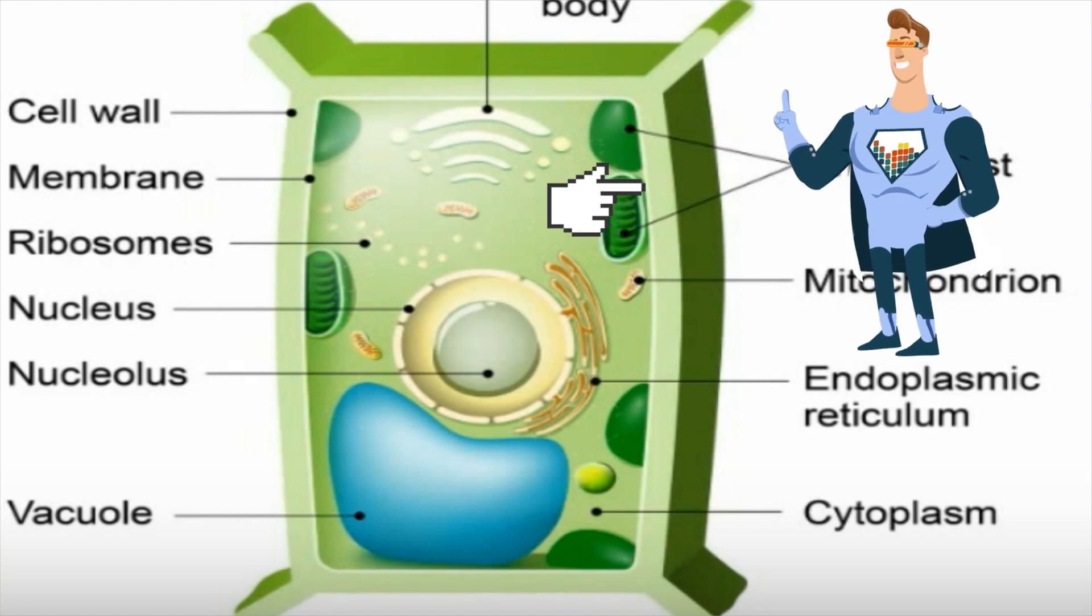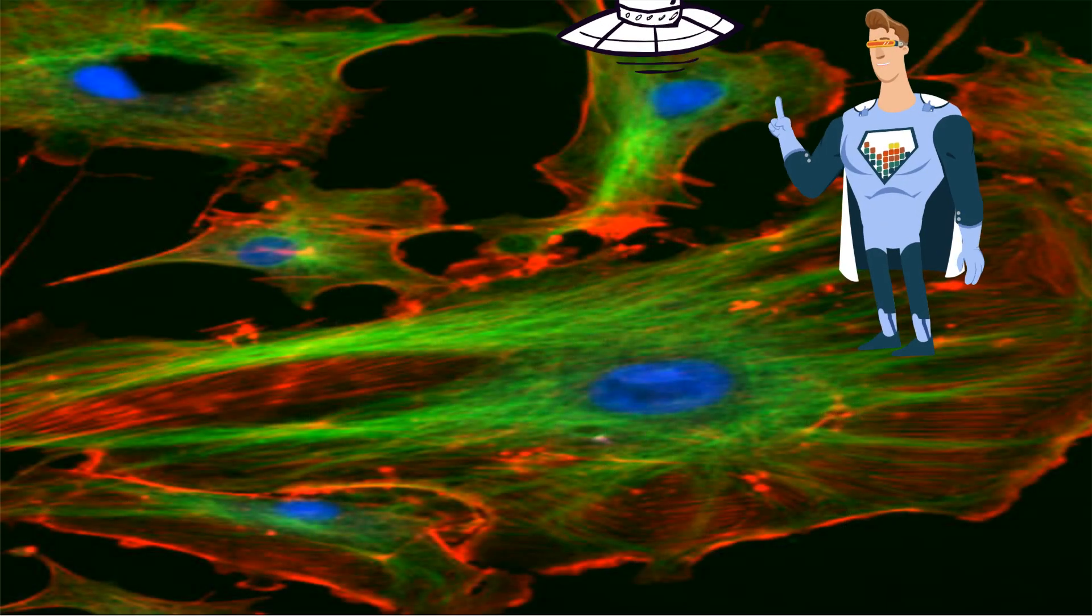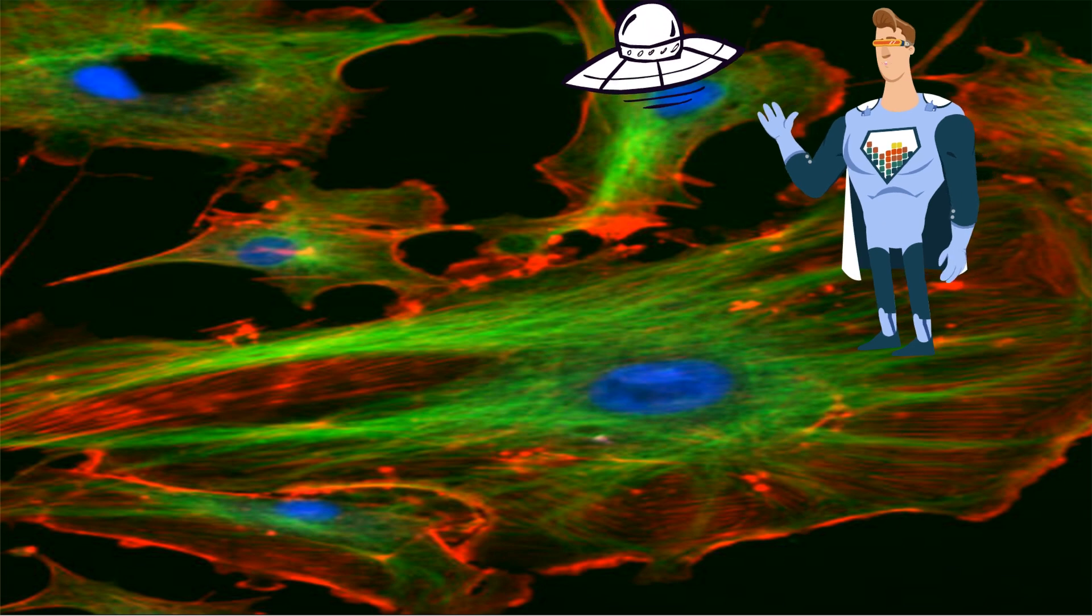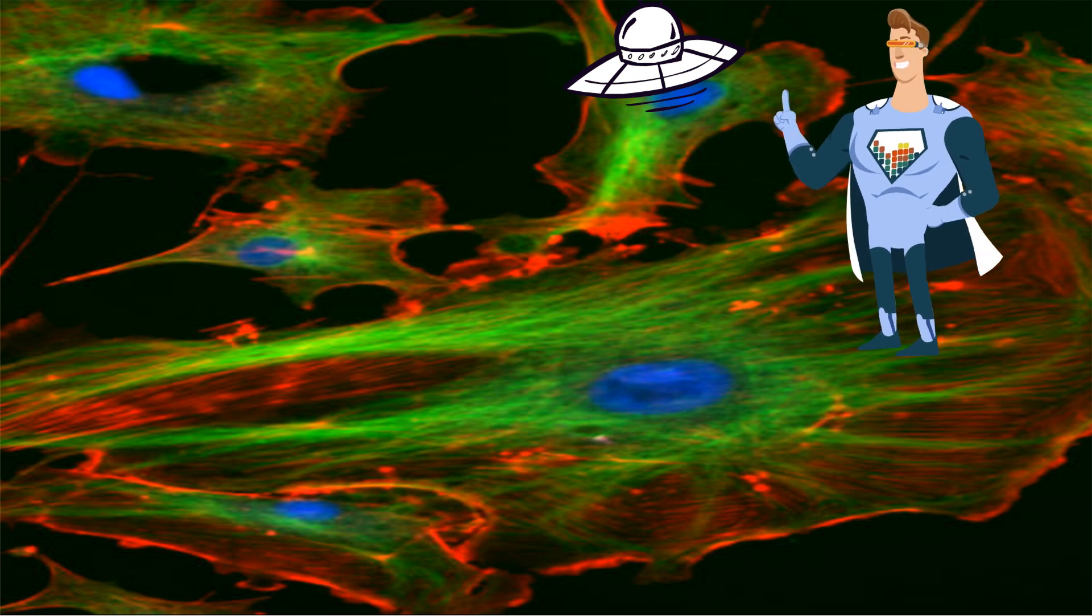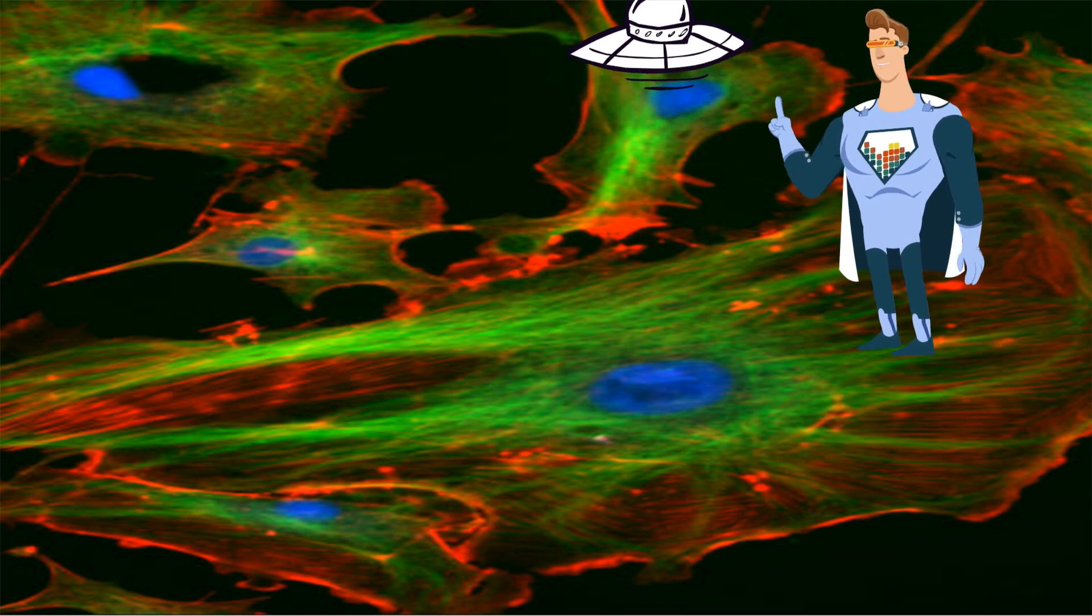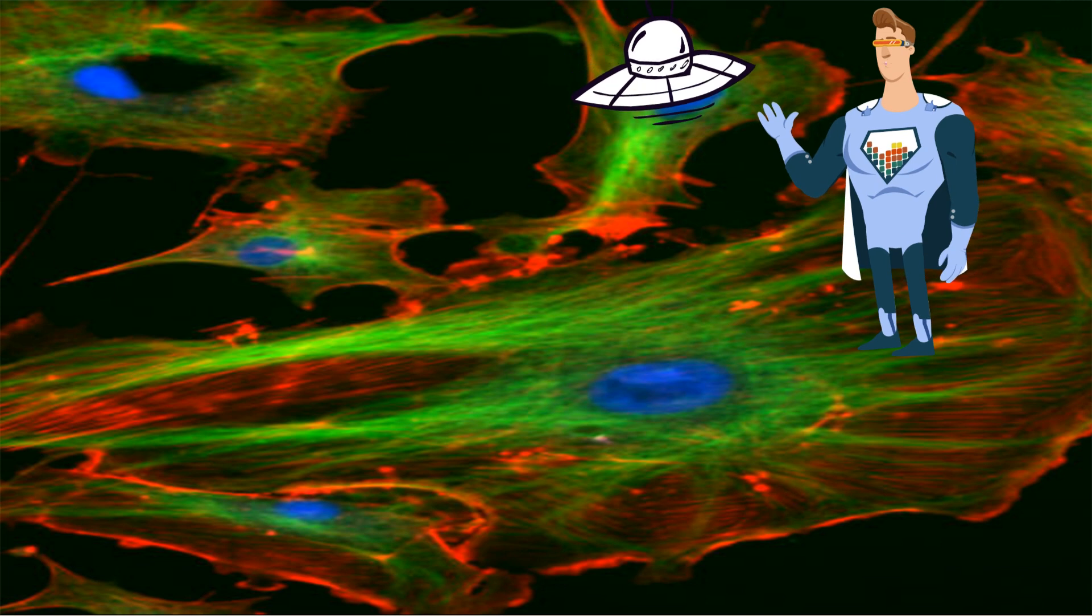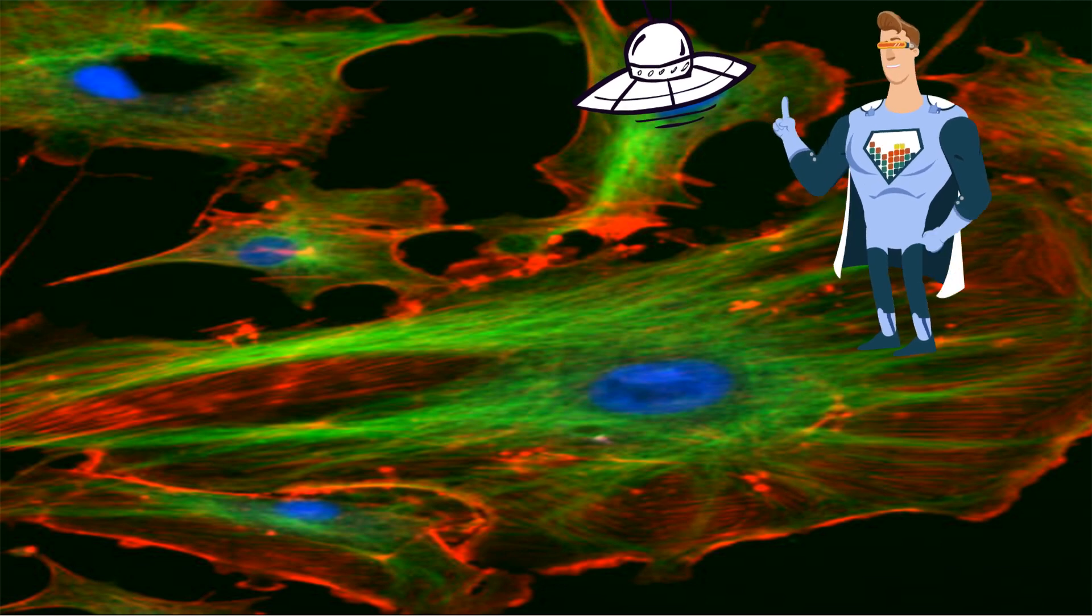In addition, a cell has a cytoskeleton which is a little bit like our skeleton. It is made of three types of proteins which work together to support the cell and to help with movement inside and out. You can see the cytoskeleton in green and red fibers.